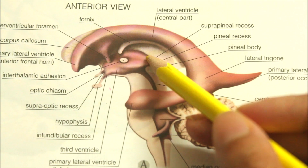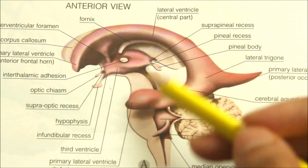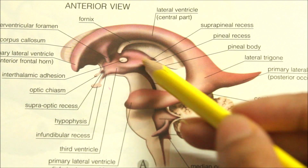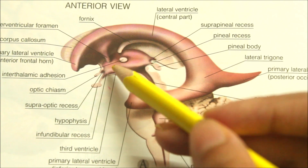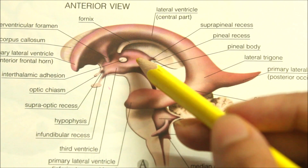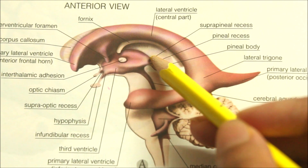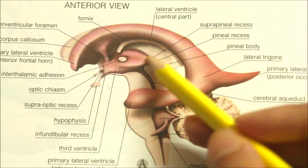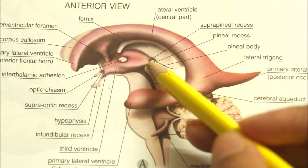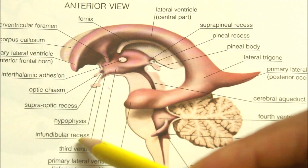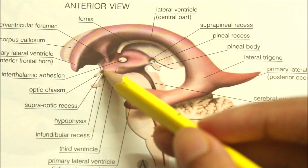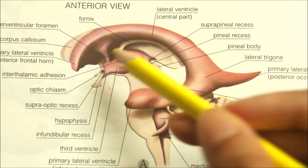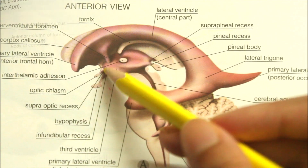Now let's learn about the recesses of the third ventricle. Recesses are extensions of the cavity. The recesses of the third ventricle are the suprapineal recess, the pineal recess, the infundibular recess, the optic recess, and one more recess called the velum.